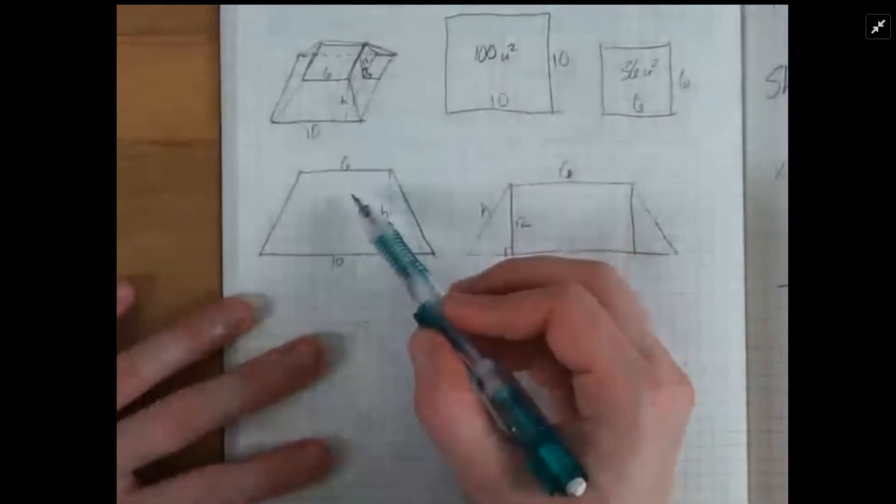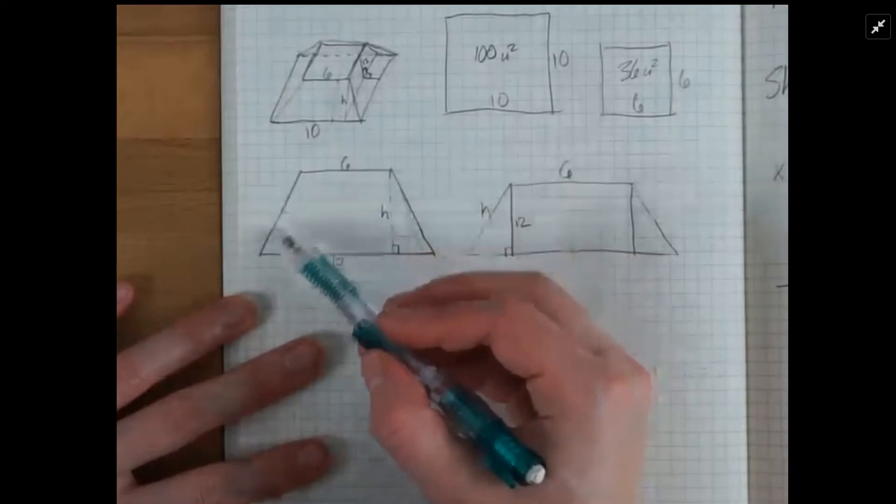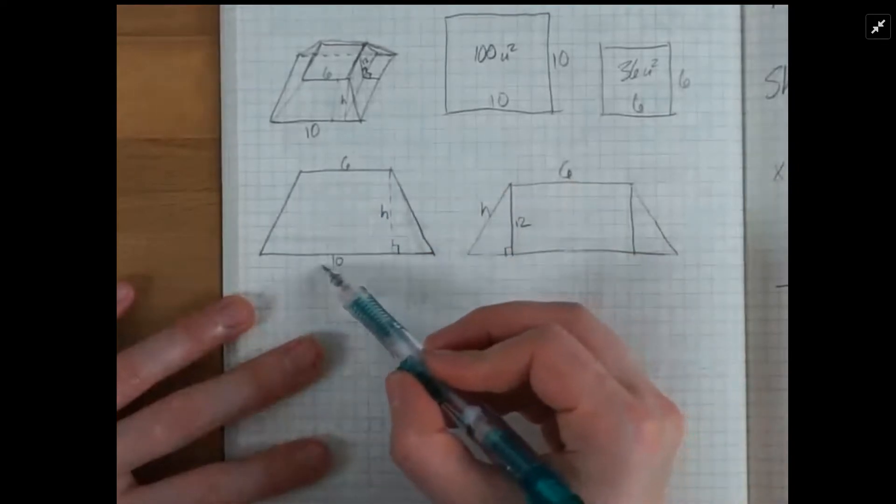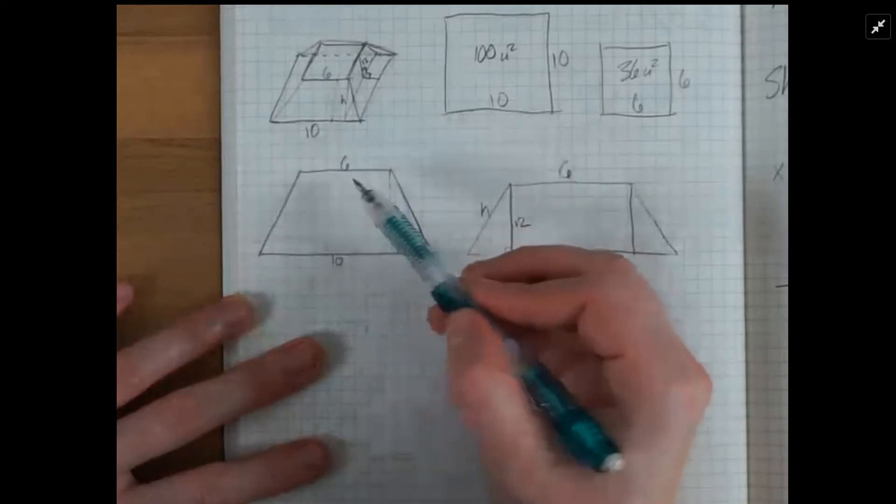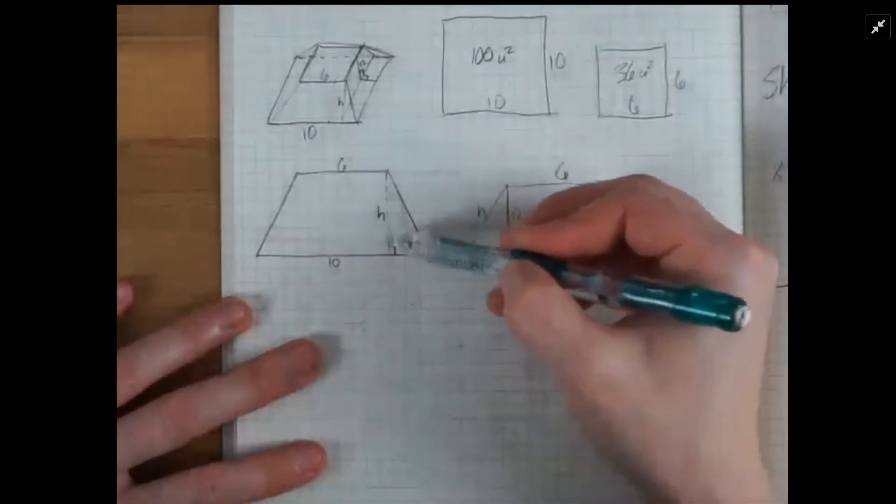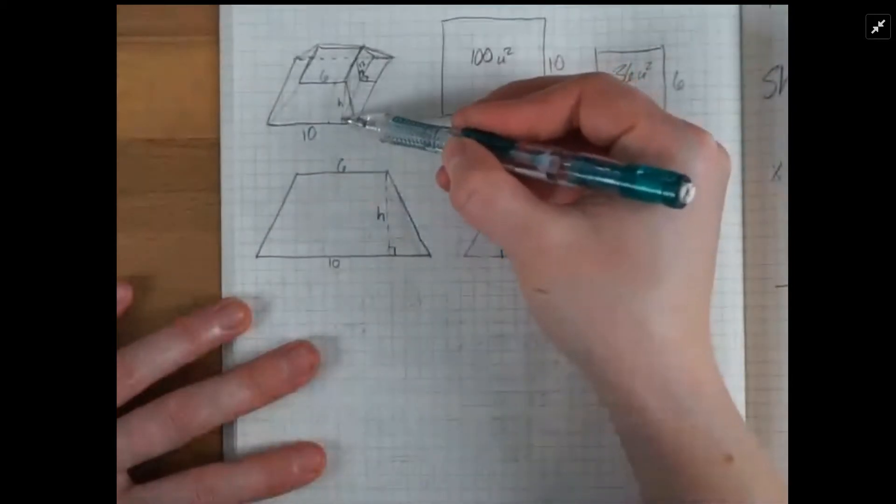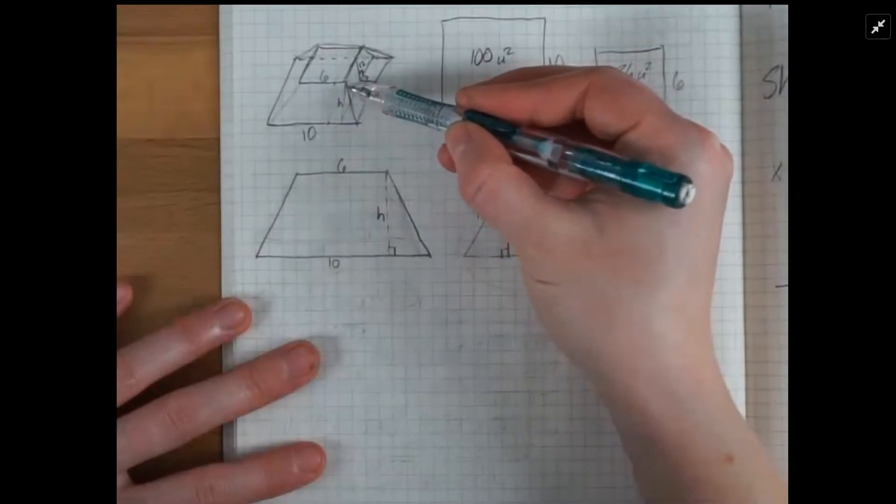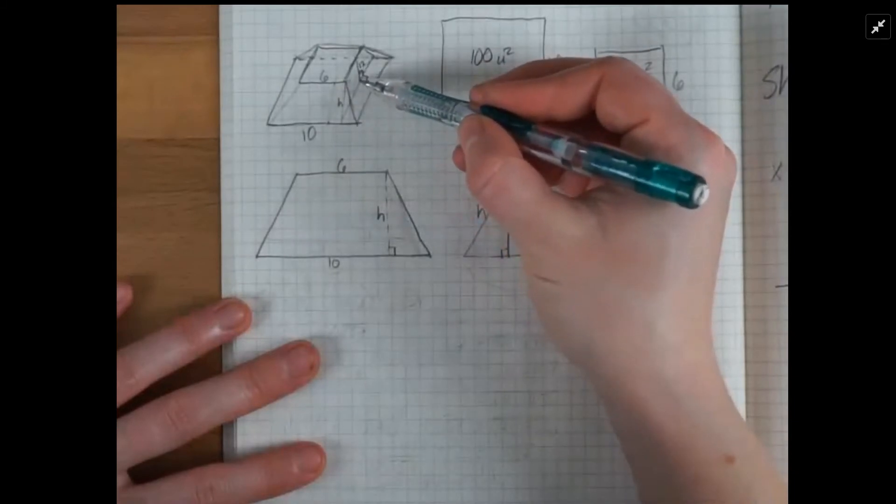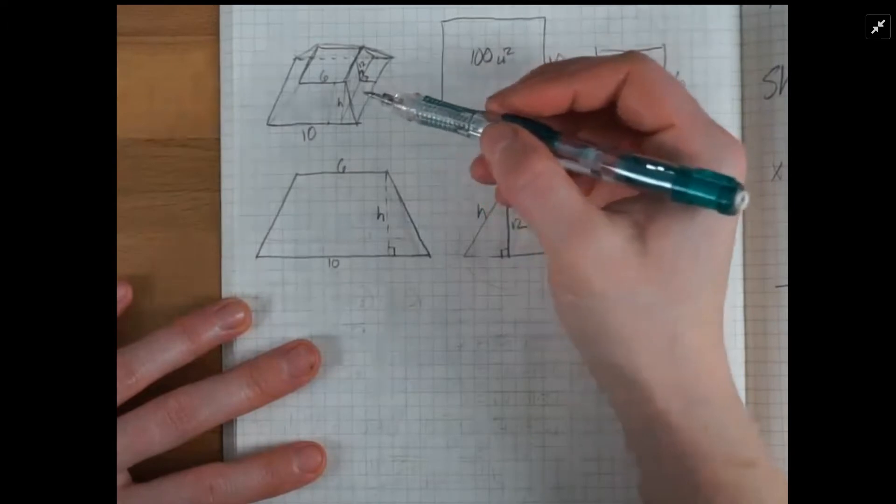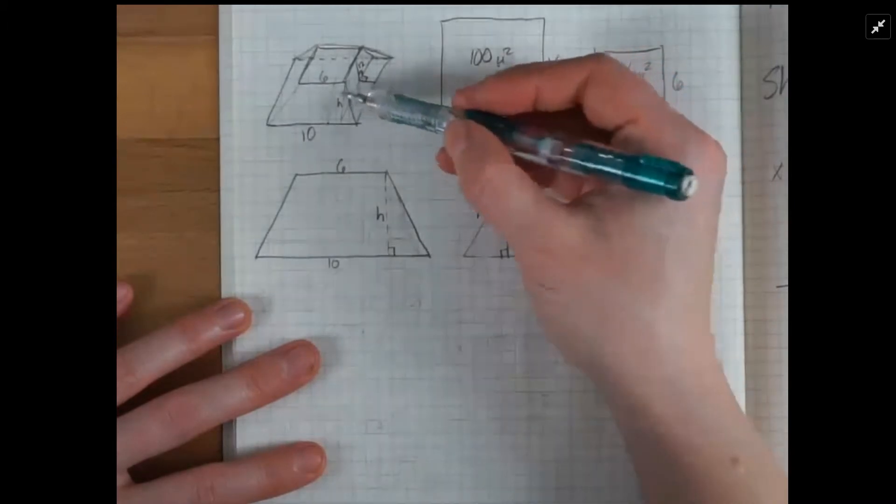And then we have the trapezoids on the side. So this trapezoid on the side has a bottom length of 10 and a top length of 6, but this H is along the diagonal there, and it's not the same as the height of the frustum. So how do I convert between the height of the frustum and this diagonal?